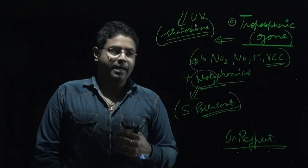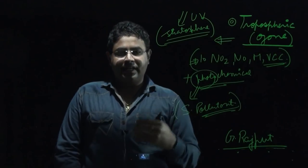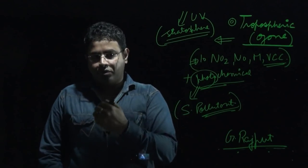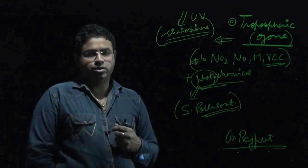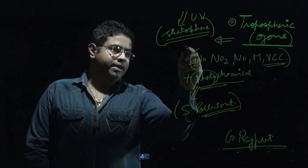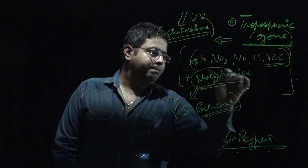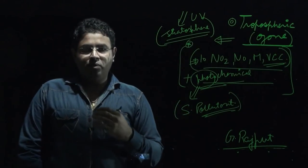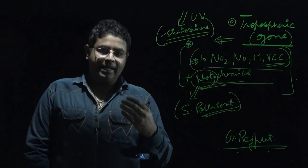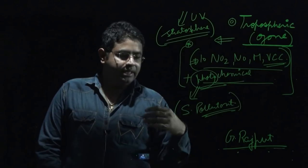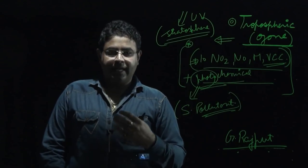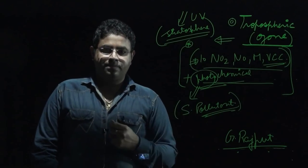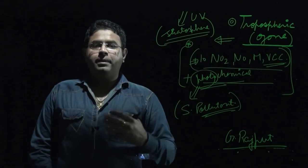Since the days of industrialization and due to anthropogenic impact, ozone levels in the troposphere are increasing day by day. To address this, we need to target the primary pollutants. If we stop the increase in primary pollutants, only then will we be able to reduce ozone's increasing intensity and level in the troposphere.